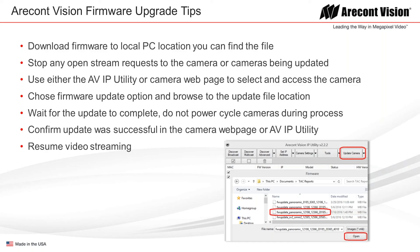Once the update is complete, you can confirm it was successful by looking at the firmware version, which will be displayed and changed in the IP utility, or in the upper right-hand corner of the camera webpage, which also displays the firmware version. Once you're sure it was successful, any custom settings can be saved and reapplied using the IP utility, or you can go back into the webpage, make those custom changes, and save them to flash on the camera. Then resume your video streaming, and you're done. It's a pretty straightforward and simple process.